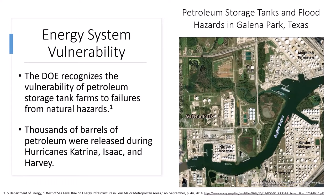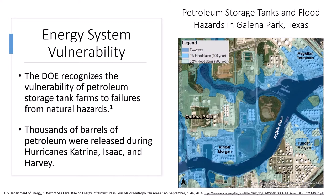The DOE has recognized that petroleum storage tank farms are vulnerable to failures from natural hazards. During Hurricanes Katrina, Isaac, and Harvey, thousands of barrels of petroleum were released from storage tanks and spread by floodwaters into surrounding communities.